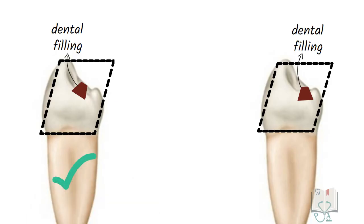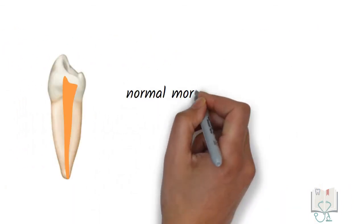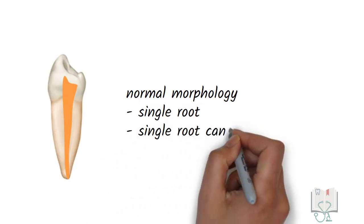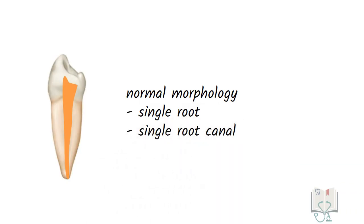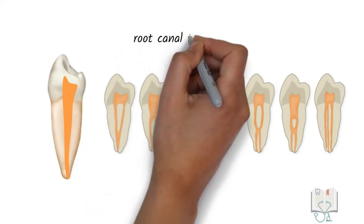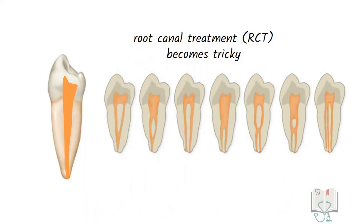For clinical considerations, as the tooth has a rhomboidal shape, any restorative procedure on the crown should be done carefully, keeping the crown's lingual tilt in mind. Even though the normal morphology of the permanent mandibular first premolar has a single root with a single root canal, numerous variations of pulp canals have been seen. Because of this, root canal treatment of this tooth becomes tricky for an endodontist, sometimes being called the 'endodontist's enigma.'